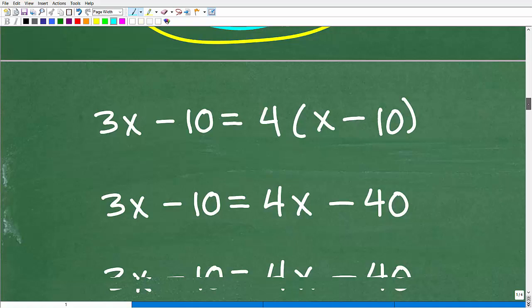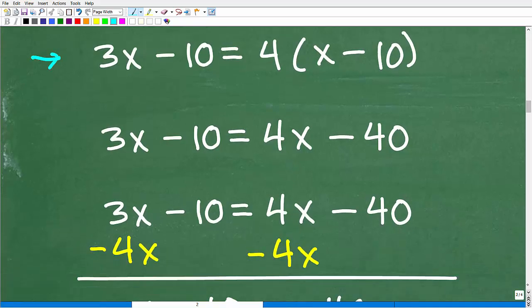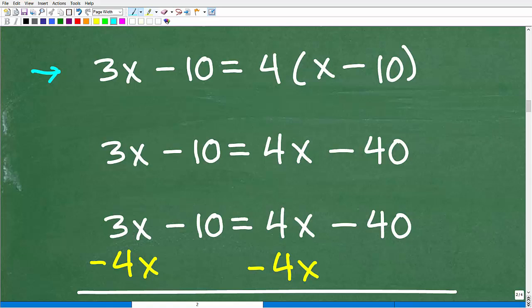Let's go ahead and finish this problem up. Now we have to focus on solving this equation right here. 3X minus 10 is equal to 4 times X minus 10. First thing is first, we have to apply the distributive property right here. We're going to take this 4, multiply it by X, and multiply it by 10. Now we have 3X minus 10 is equal to 4X minus 40.